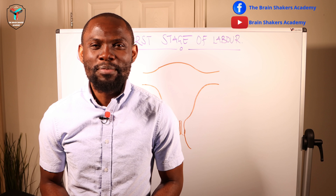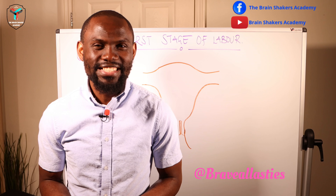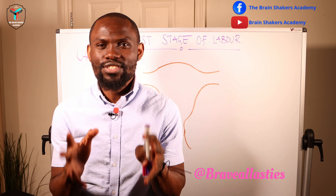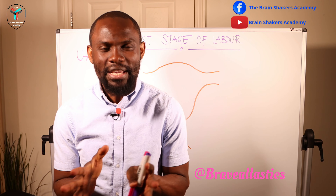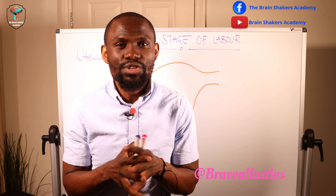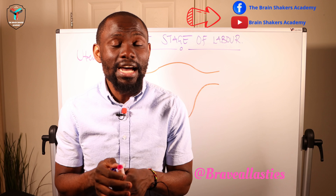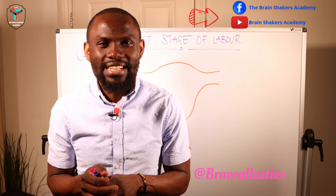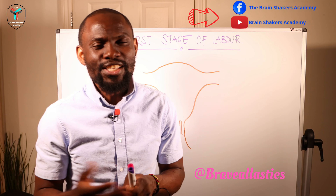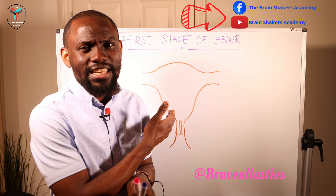Hello Brain Shakers, welcome to the Brain Shakers Academy. We continue looking at the process of labor, and in today's session we're definitely going to be looking at the first stage of that process. We mentioned in our earlier sessions that the first stage of labor transcends from the onset of regular rhythmic uterine contractions all the way until the cervix is classified as 10 centimeters dilated. If you haven't watched that video, do look out for it on my Facebook page and the YouTube page, Brain Shakers Academy. So let's get into today's session and understand the physiology of the first stage of labor.